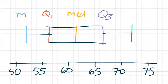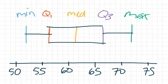Where this is the minimum. This is the maximum. We have all five values that we need here.